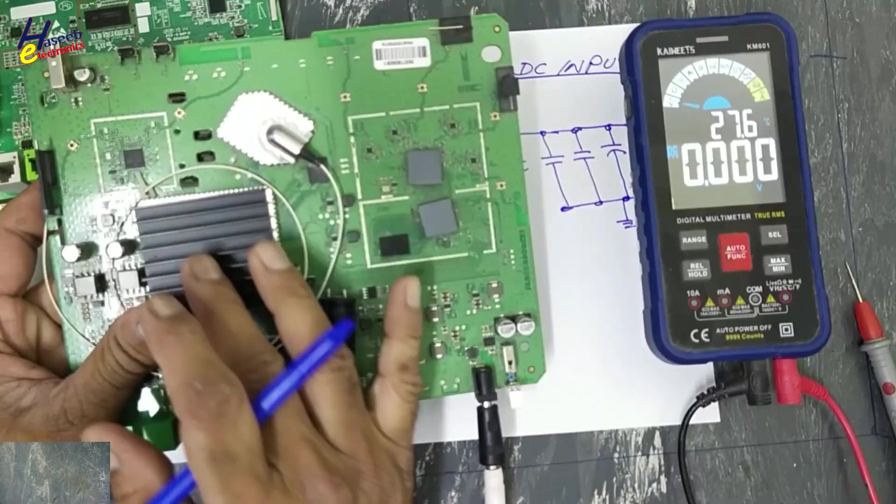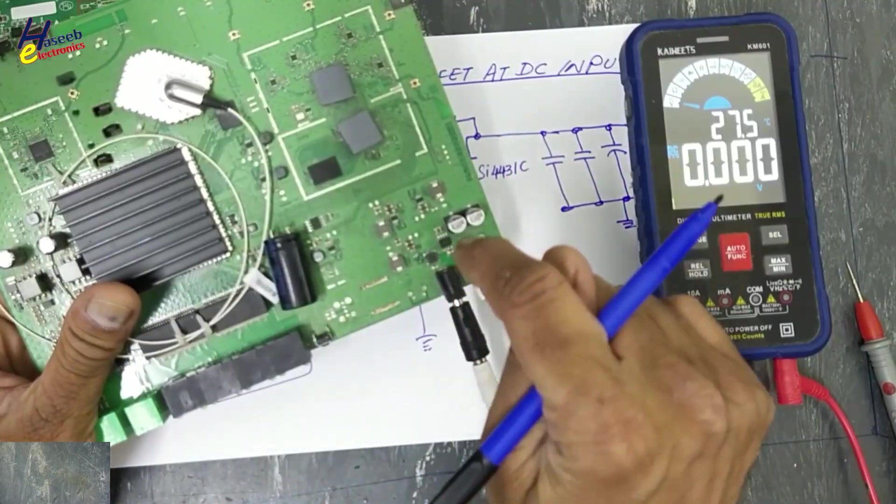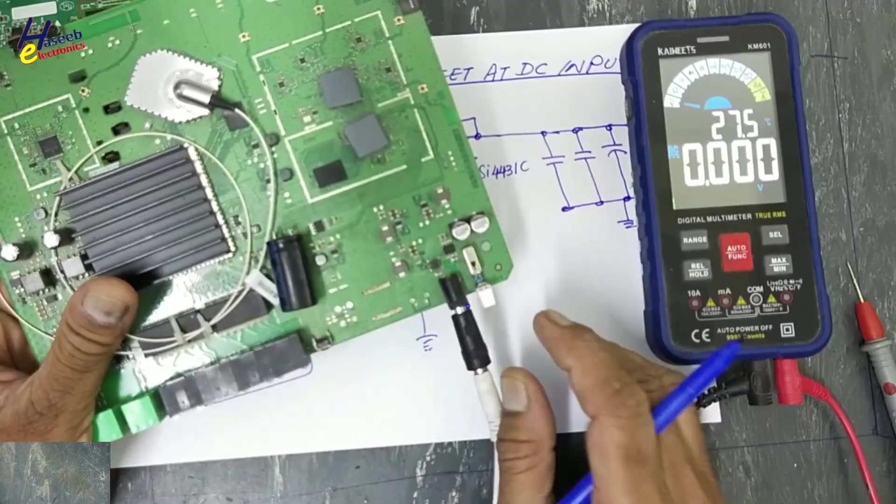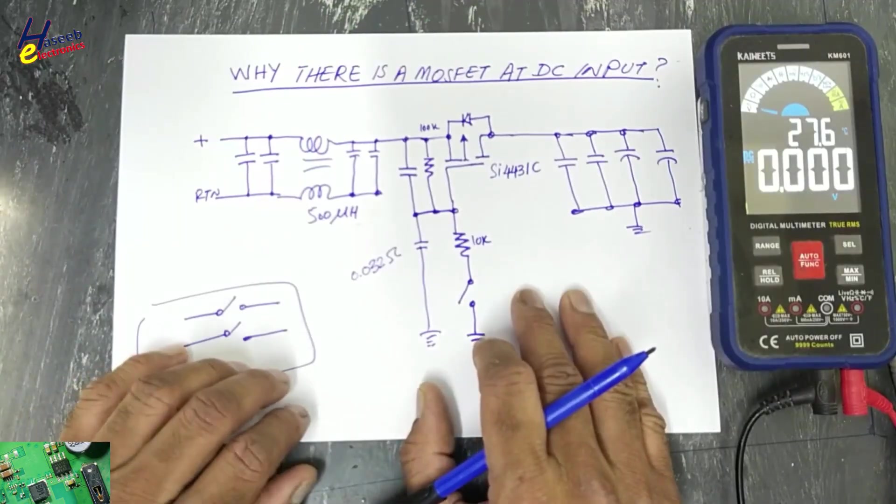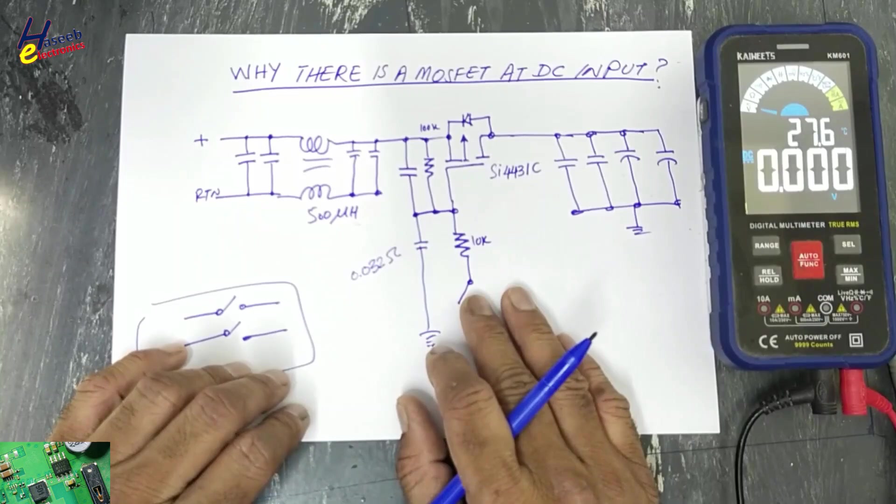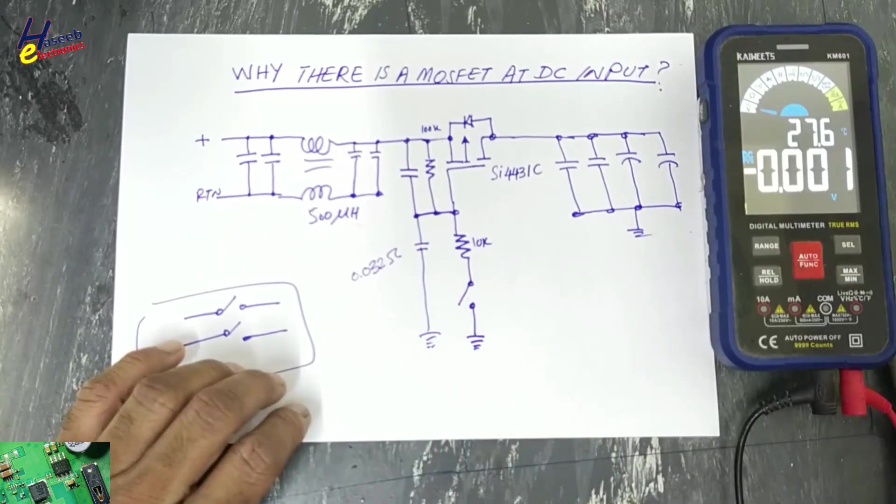But to protect the processor, to protect all the sensitive electronics, this is the best option - to use MOSFET-based DC line switch. If this video is informative, hit the like button. If you have any question, please write in the comments. Thanks for watching. Assalamualaikum warahmatullahi wabarakatuh.